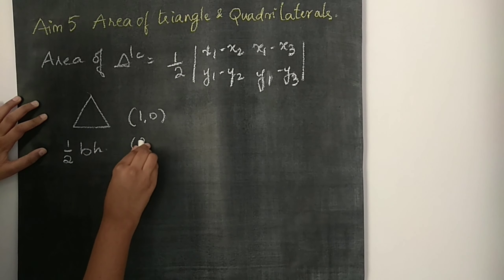Suppose they have given us some points like (1, 0), (2, 3), and (4, 5) — three points. How to find the area of the triangle? So the first point will be x1, y1; second is x2, y2; third is x3, y3. A triangle has 3 sides, and you have to substitute these values into the formula.